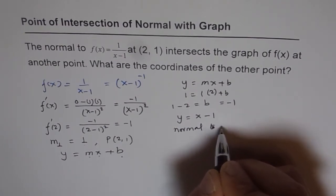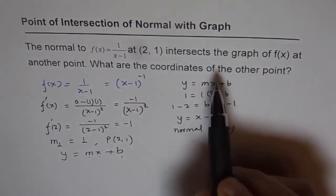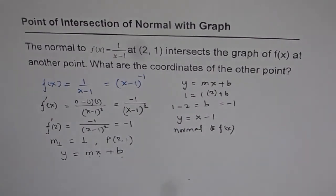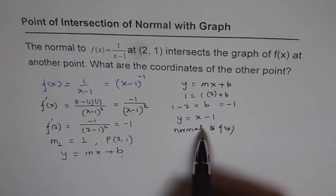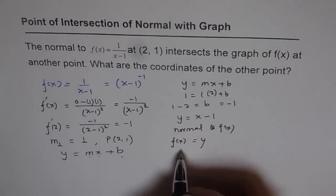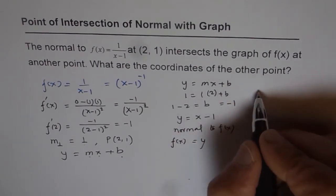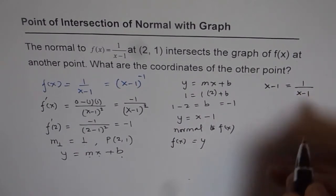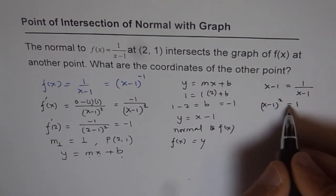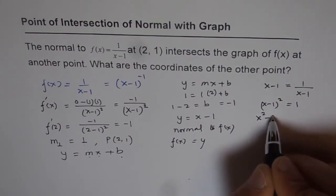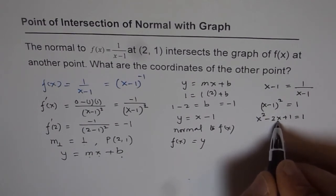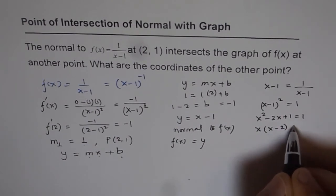Now what we need to find is where this normal intersects the graph of f(x) at another point. At whichever point it intersects, the value of the function and the normal should be equal. So f(x) should equal the y value of the normal. We will solve this equation to find the point of intersection. Setting x minus 1 equal to 1 over x minus 1, we cross multiply to get (x minus 1) whole square equals 1. Expanding, we get x squared minus 2x plus 1 equals 1.